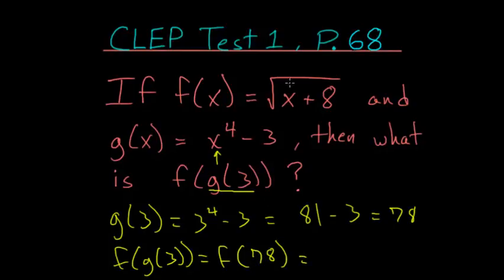Replacing the x value in our function f of x with 78, we have the square root of 78 plus 8. And this is equal to the square root of 86.